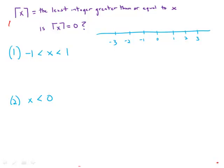This function is called ceiling of x. If you put in an integer, you get out an integer. If you put in a non-integer, say one and a half, it gets rounded up to the least integer greater than it. So one and a half would round up to two. In fact, anything between one and two gets rounded up to two.